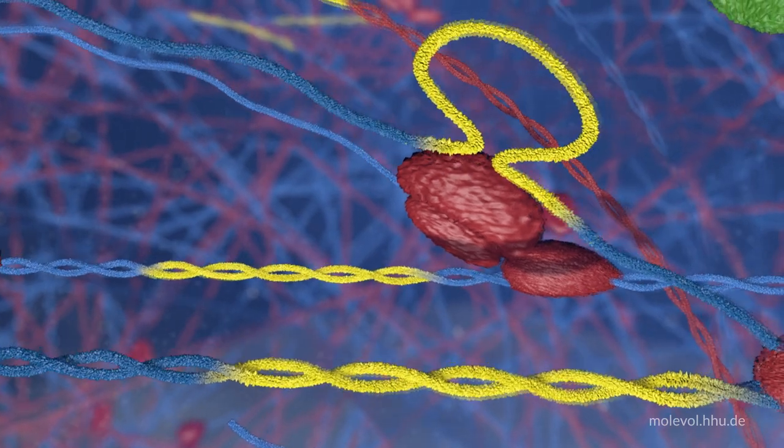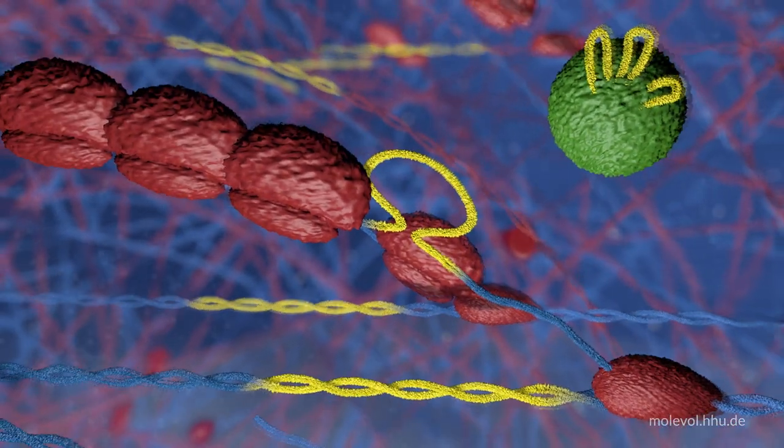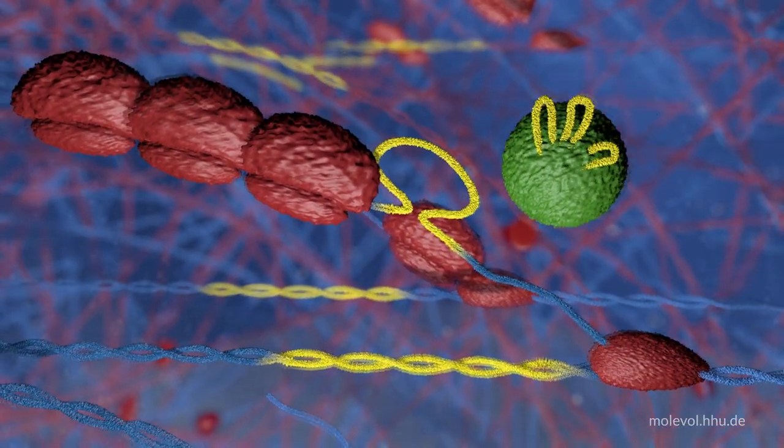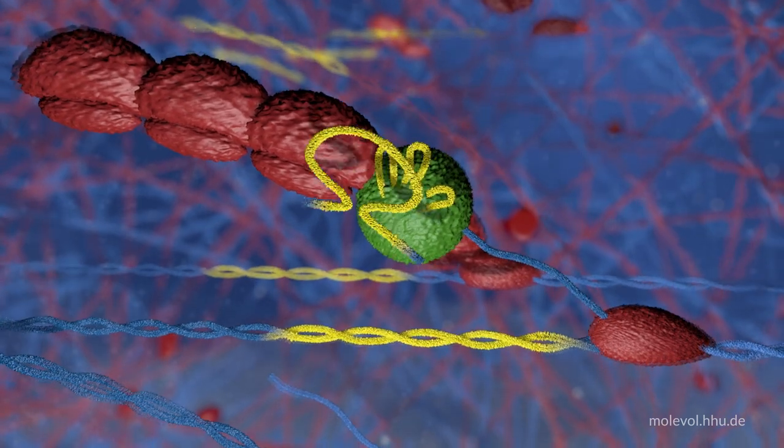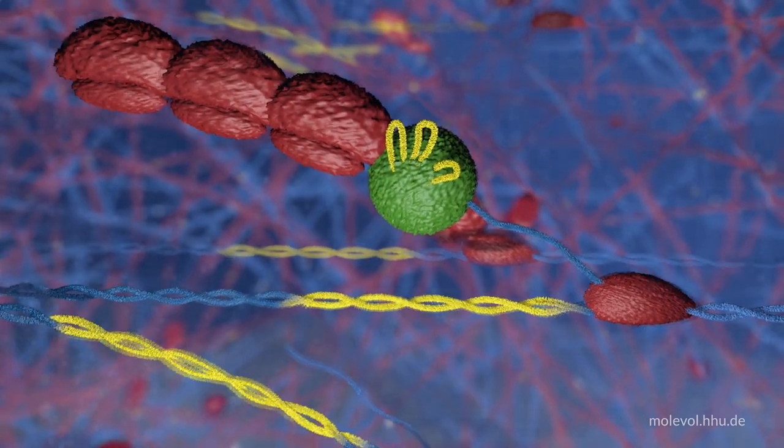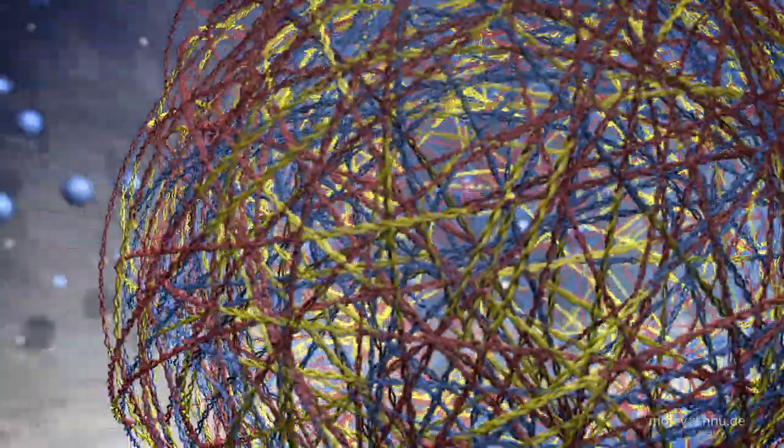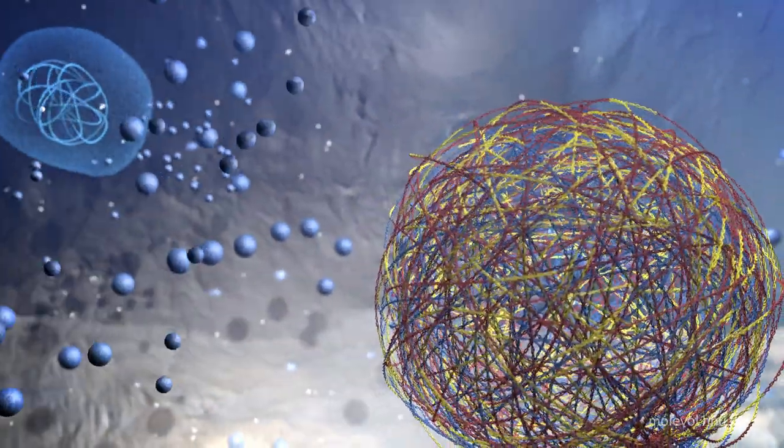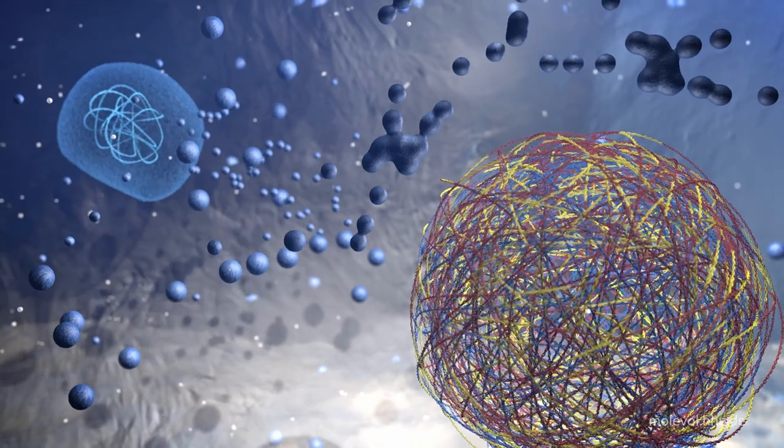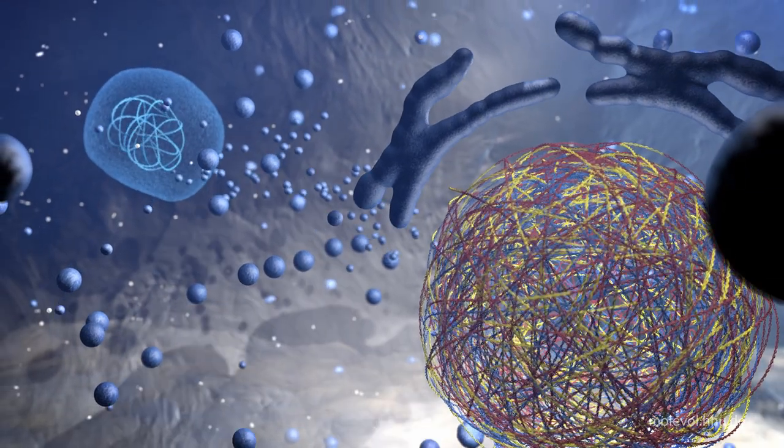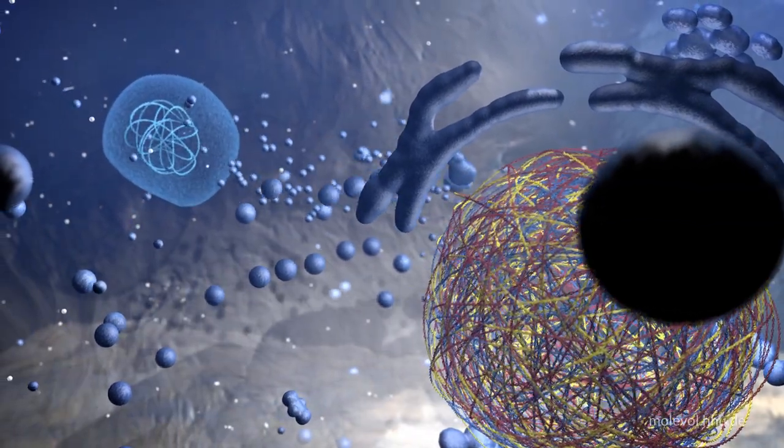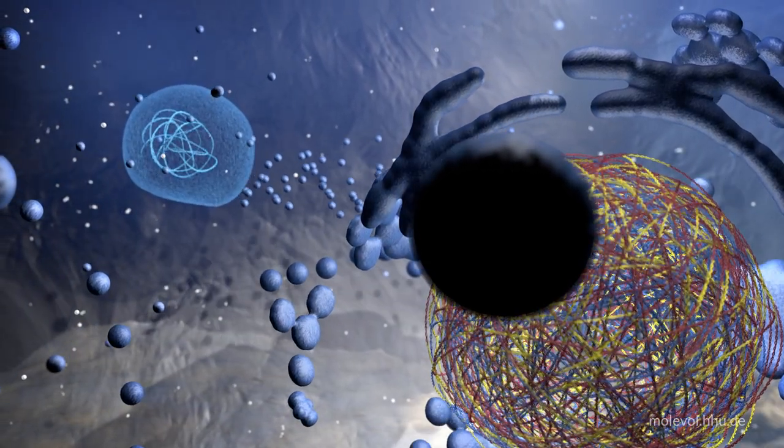These spliceosomal introns interfere with translation at all genes where they are present, if they are active in the same compartment as ribosomes. This is probably the selective pressure for the origin of the eukaryotic nucleus. By separating splicing from translation, the slow process of splicing could go to completion in the nucleus so that ribosomes could translate intron-free mRNA in the cytosol.